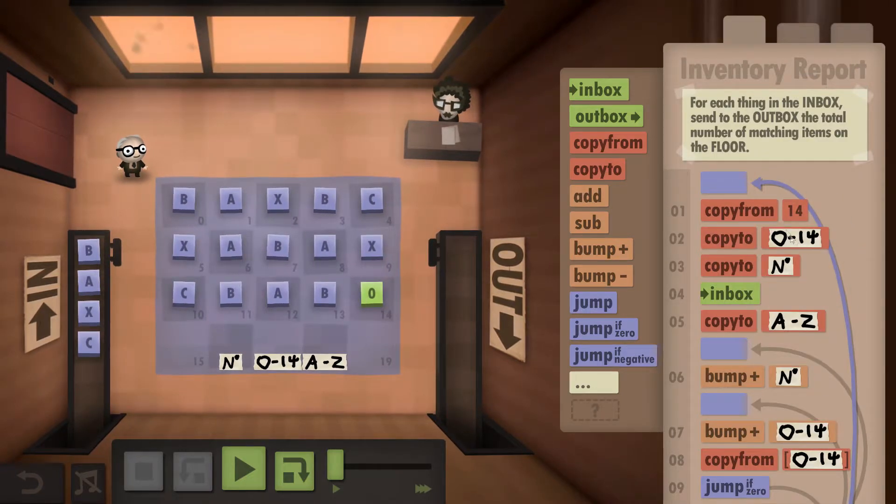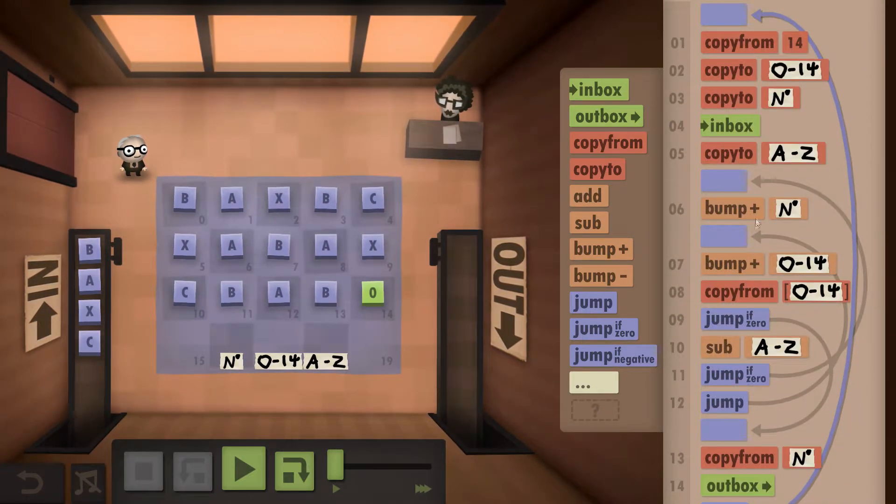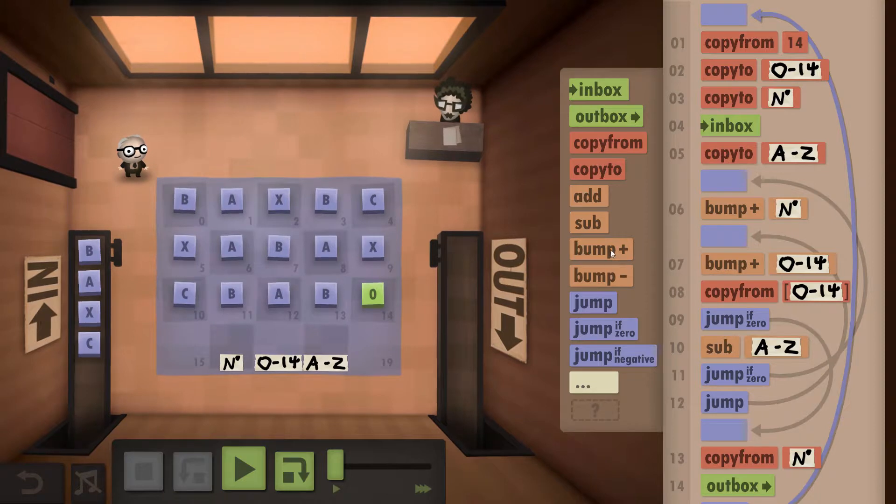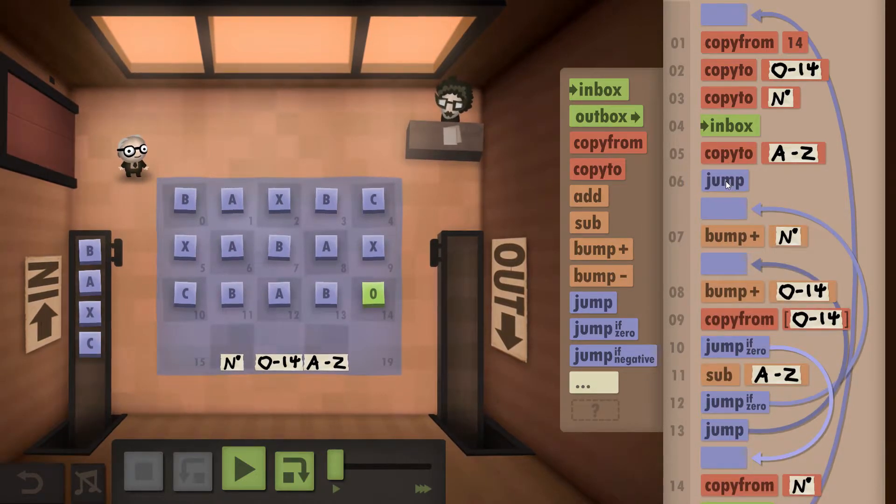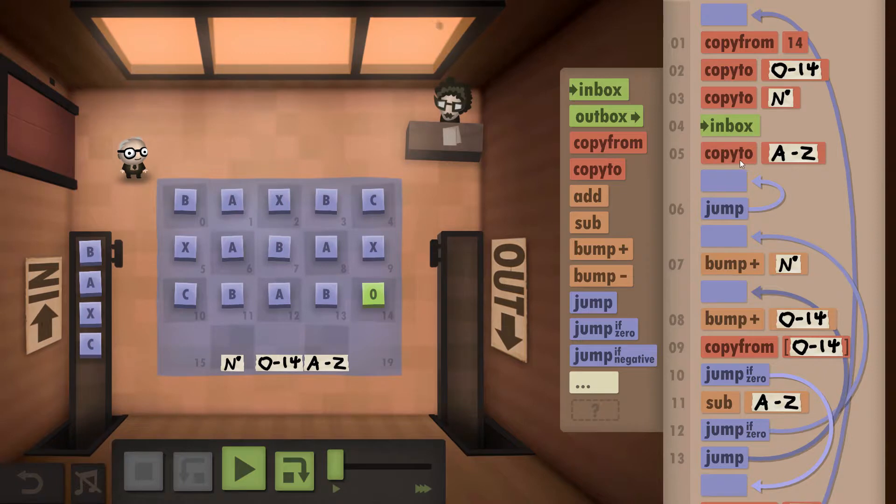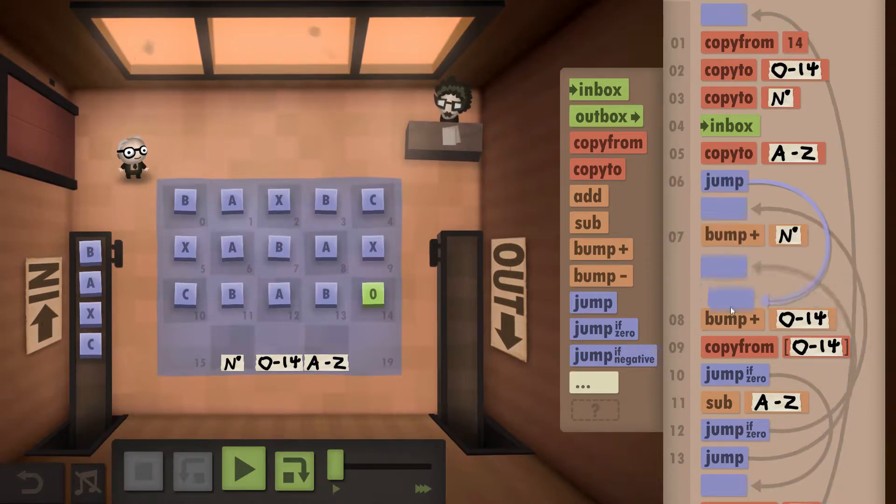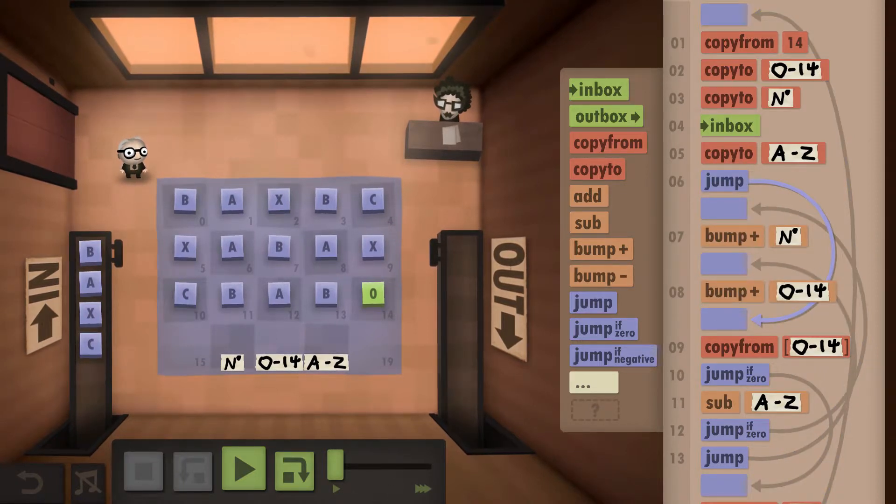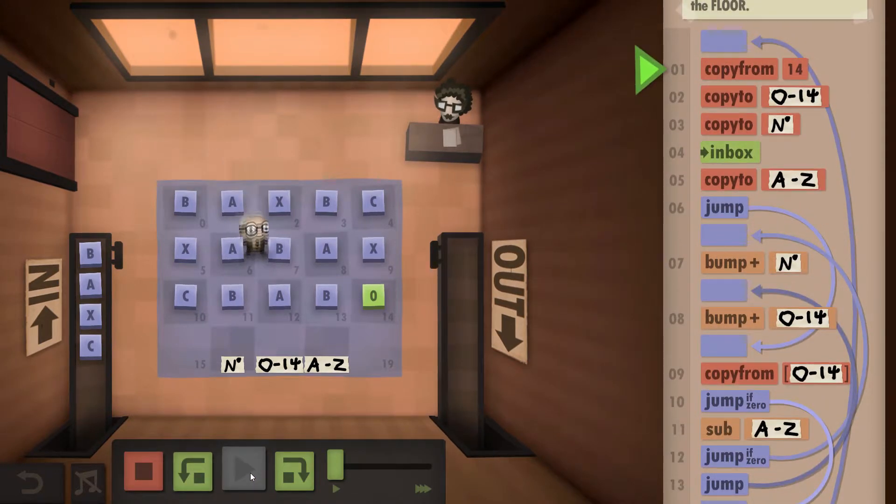Now because we added these bumps in, we need to actually jump them on the very first run. So after we've gone to the inbox and written down the letter, we need to put a jump in and skip the bumps. Now I'm going to hit play and everything should work.